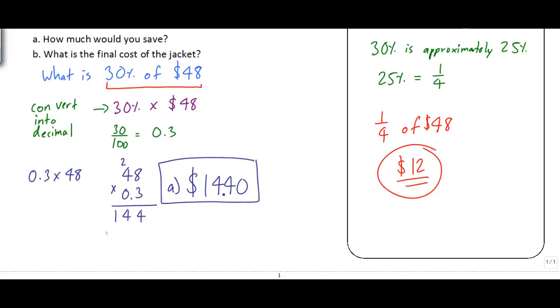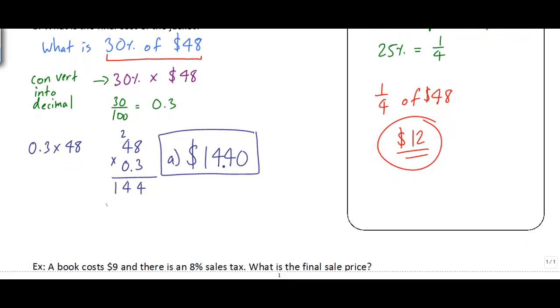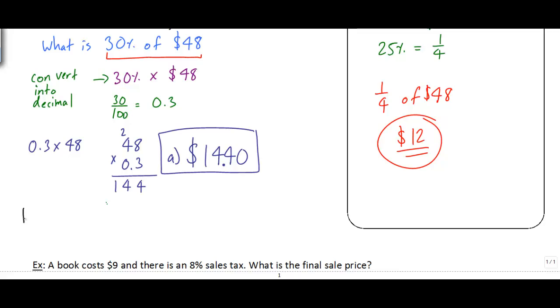Part B is asking what is the final cost of the jacket? To do that, we're going to have to do a subtraction. The jacket initially was $48, and I'm going to subtract from that $14.40. Remember, with subtraction it's really important that we line up our decimals. So $48 is actually $48.00. And now I can do my subtraction.